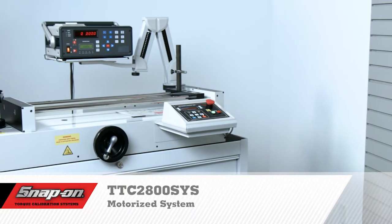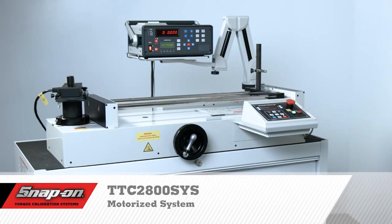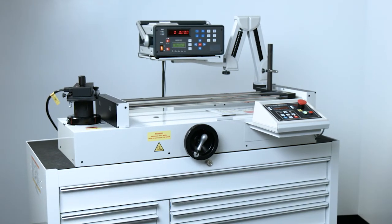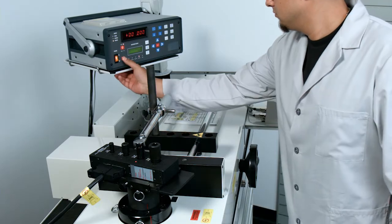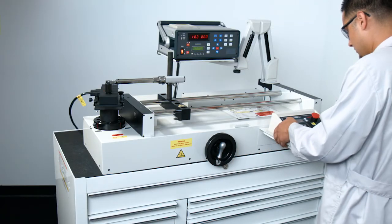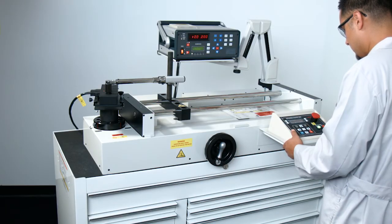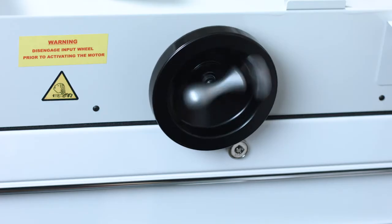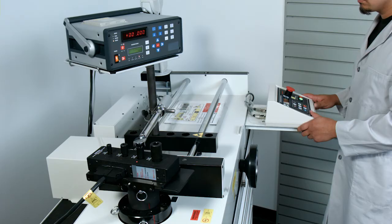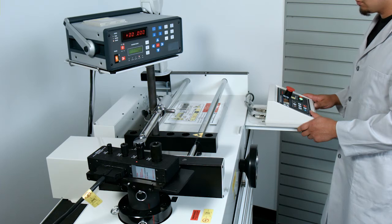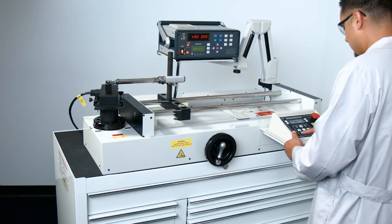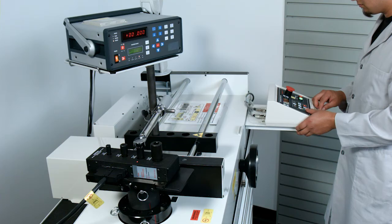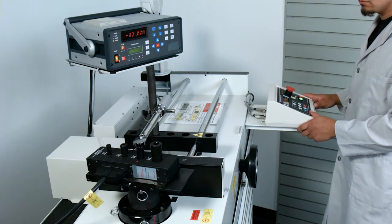Snap-on's TTC2800SYS motorized calibration system is extremely accurate, reliable, and easy to use. Like the manual tester, it's best suited for use with 50 or more torque wrenches, but with the added advantage of having an electric motor to cycle the click wrenches at the touch of a button. Less operator fatigue means higher output. The motor is operated by a front-mounted control panel with large, easy-to-read controls. Programming the system is fast and easy. Full power operation means no strenuous exertion by the operator.